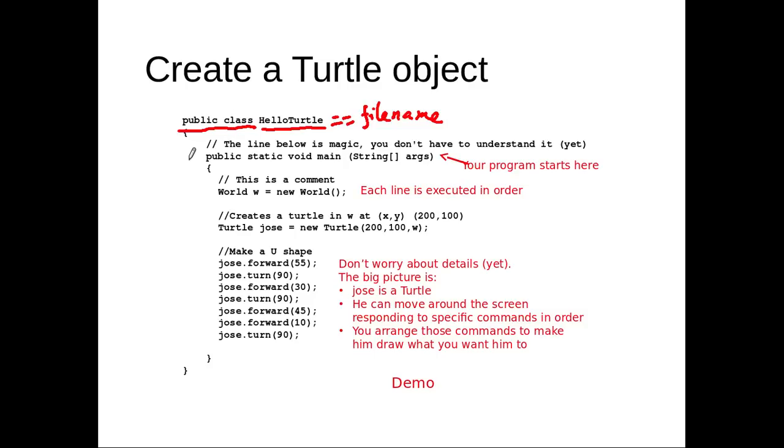And then inside your class, you have this magic line, which is the main function header. public static void main, and inside the parentheses, you have this string square bracket args. And inside this main, inside this set of curly bracket, this set of curly bracket, this is really your code. And all the codes in here are executed top down, from the first line all the way to the last line. So it's called sequential execution.